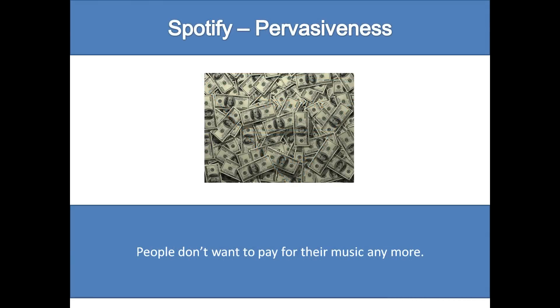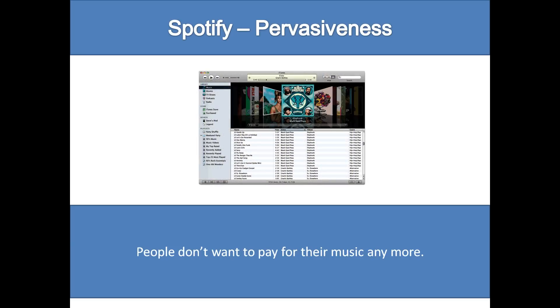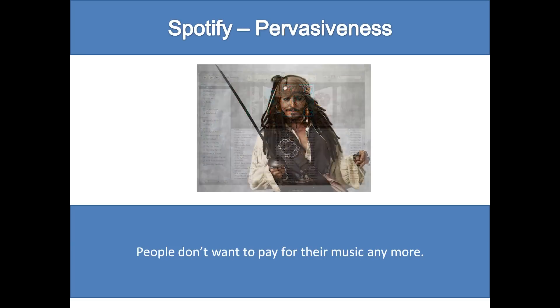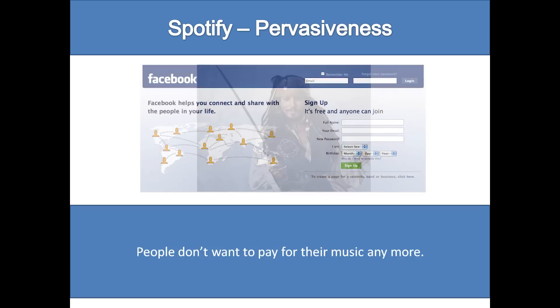Pervasiveness in Spotify: Spotify changes the way that people view music. After getting all the music they could want for free, people will no longer want to pay for it. This undermines systems like iTunes, which charge 69 cents to $1.29 per song. Piracy is also combated by this system because it is safer to get music on Spotify. Spotify's integration with Facebook through friends' playlists and a Facebook login helps spread Spotify to more people by letting people know on Facebook when you are listening to music on Spotify.